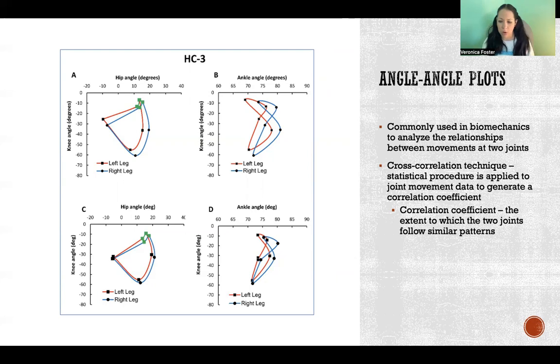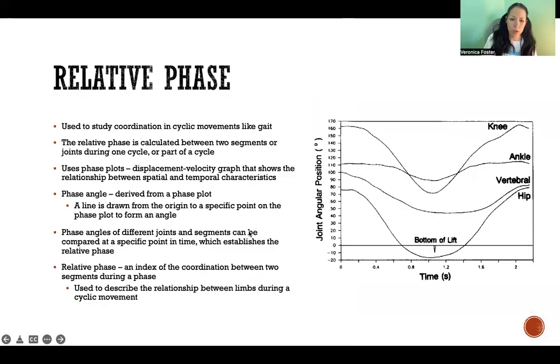So it can generally generate a correlation coefficient essentially to say how much do these joints follow a similar pattern or how much are they coordinated in their movements. So between zero and one, one being the most coordinated.